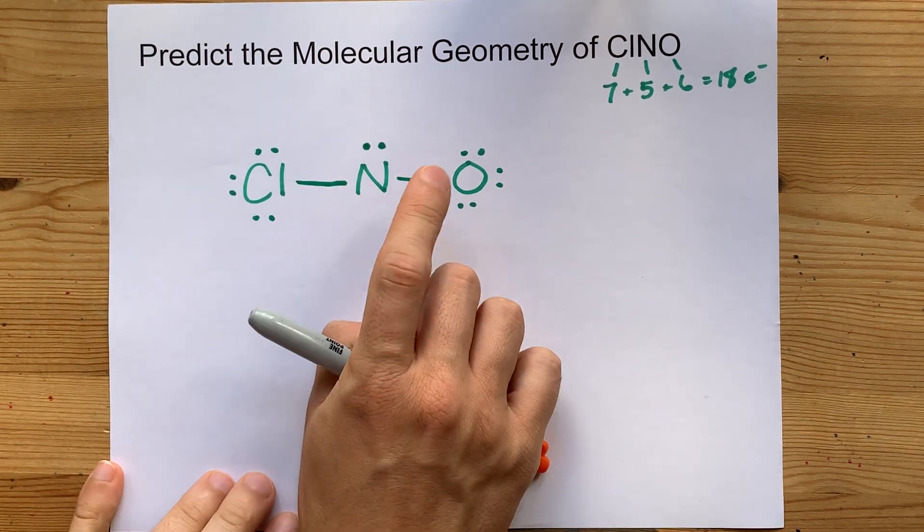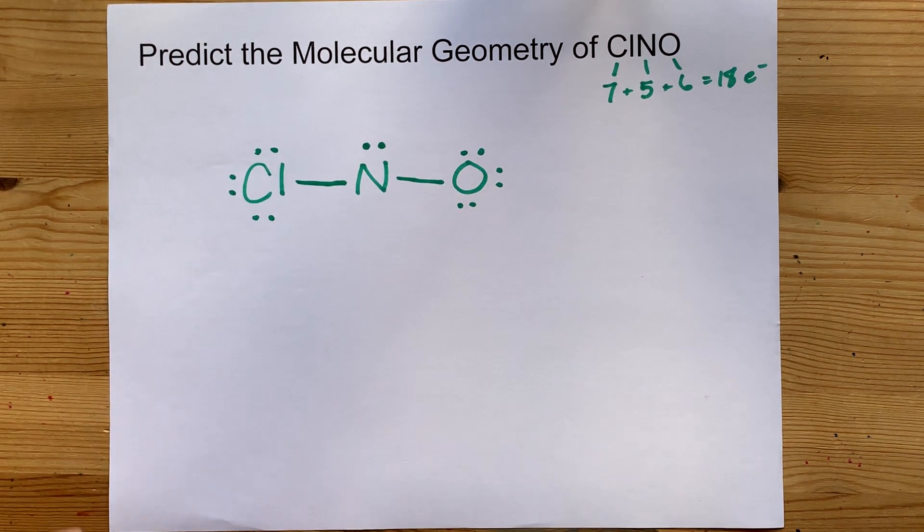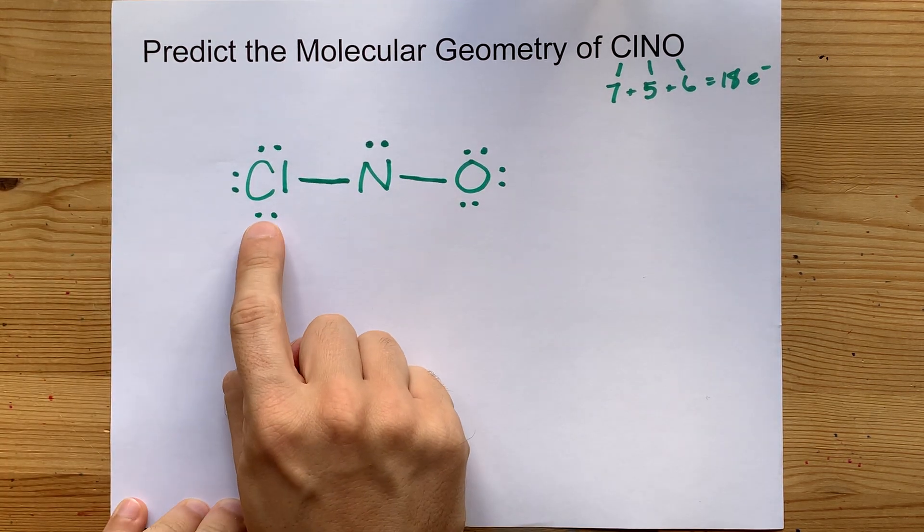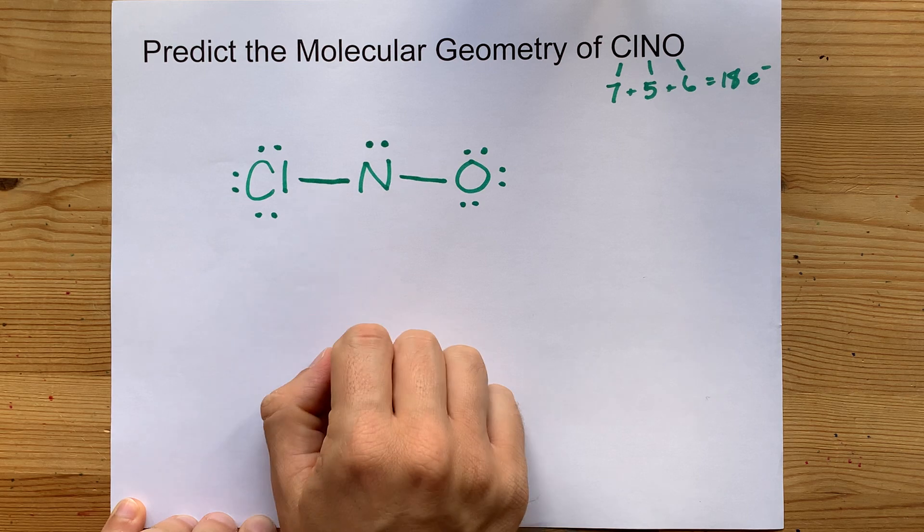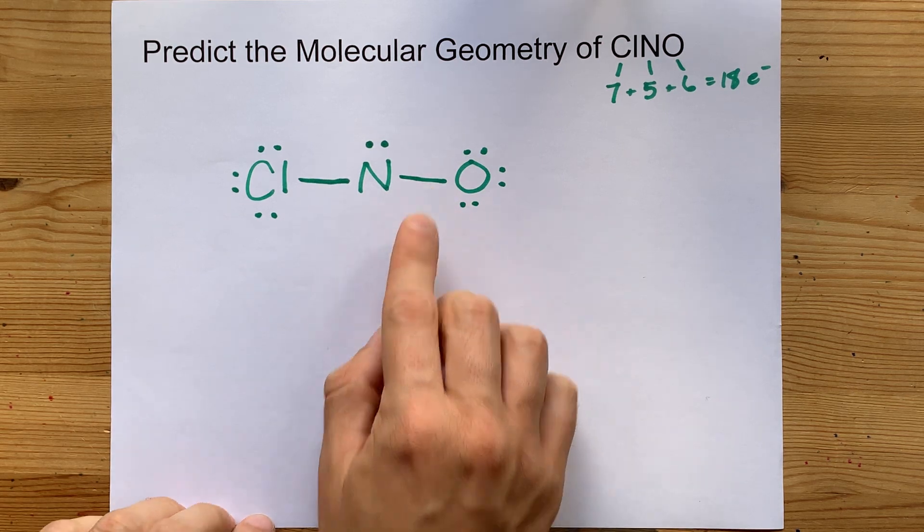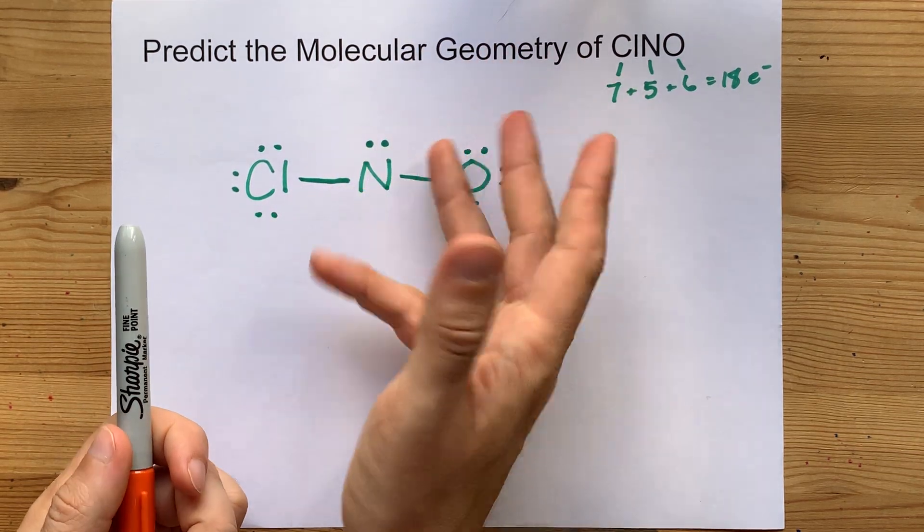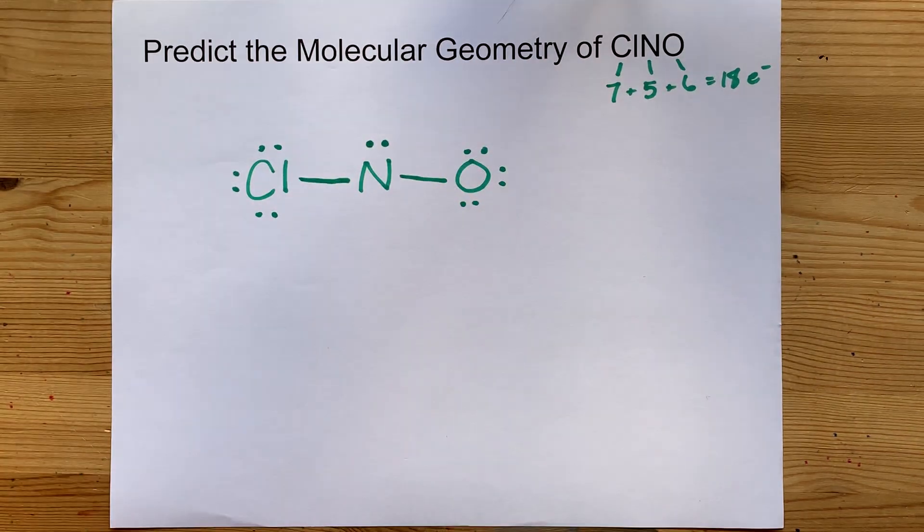This nitrogen only has 6 around it, though. So we have to decide whether we're going to bring a lone pair in from this chlorine and share or from this oxygen and share. Fun fact, it doesn't actually matter for the molecular geometry, but I like drawing good Lewis structures.